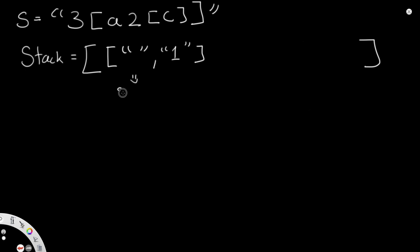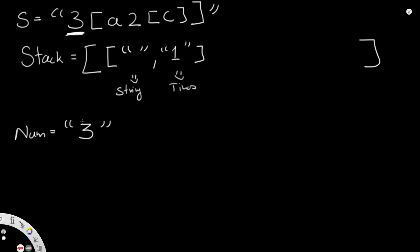The empty string represents the encoded string so far, and the number represents how many times that string is going to be repeated. We also have a variable called 'num', stored as a string, which we'll use to track the current repeat count. We'll convert it to an integer when needed. Now we iterate through the input. The first character is '3', which is a number, so we add it to 'num' — now num equals '3'.